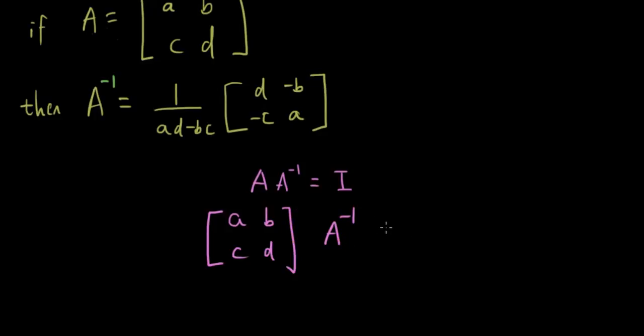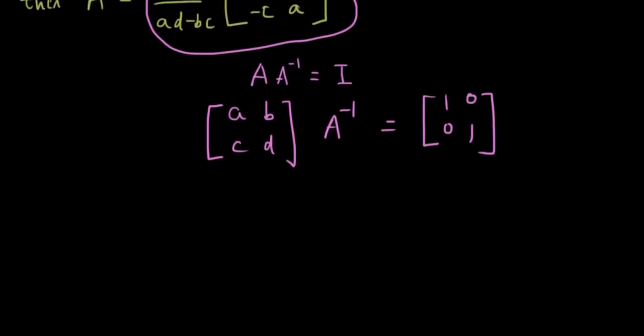So A times its inverse is equal to the identity matrix, which is [1, 0; 0, 1], and we didn't know what the inverse of it is. Previously I've just shown you guys to use this formula, but now I want to explain to you guys where that formula comes from.